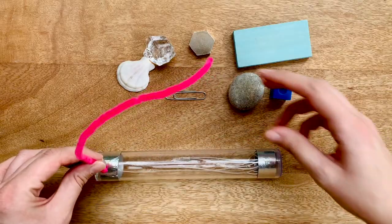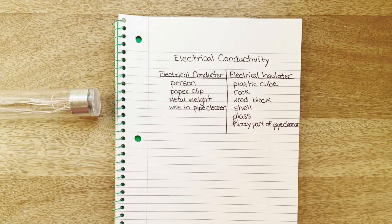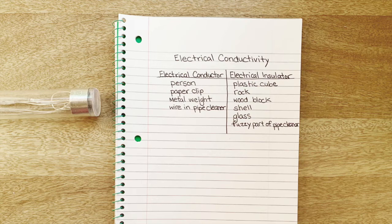Let's take a look at our record of our observations. Here I have a t-chart to show the electrical conductivity of the materials. The left side shows the electrical conductors. The right side shows the electrical insulators. Pretty cool, huh?